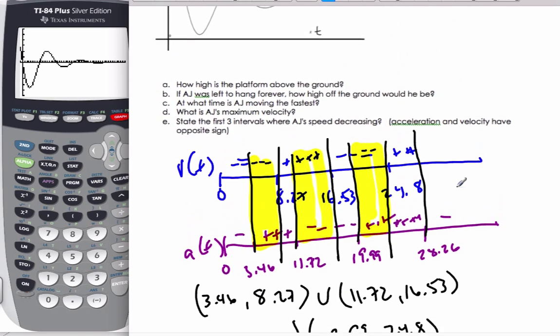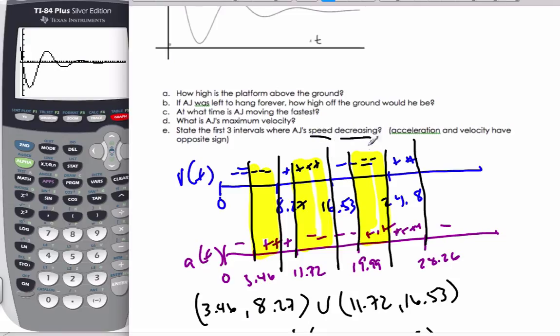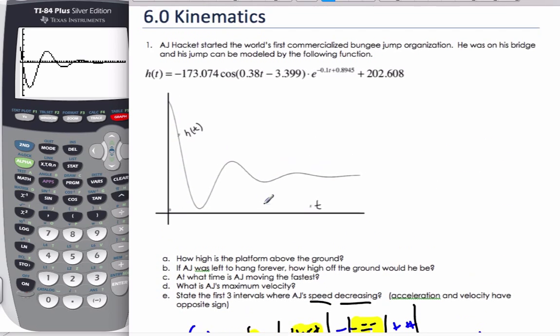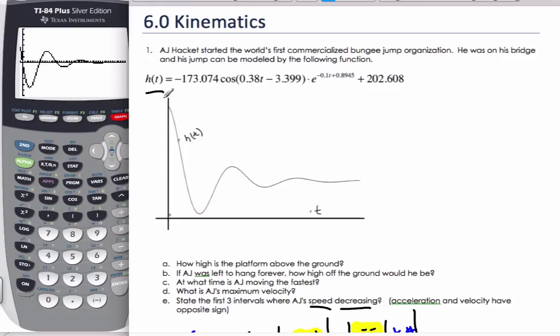And so if my speed is decreasing, acceleration and velocity are opposite signs, they are fighting each other. And these regions that are not highlighted, the speed is increasing. Here it's increasing in a negative direction. Here it's increasing in a positive direction. So there is your introduction to kinematics. This is our height or position. The derivative of that is the velocity, and the derivative of the velocity is acceleration.